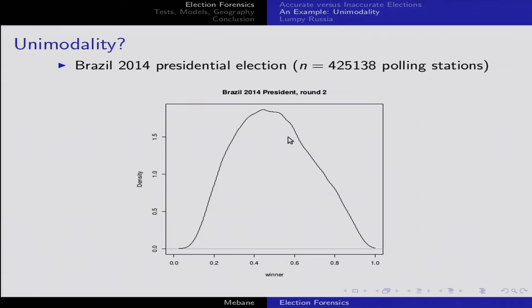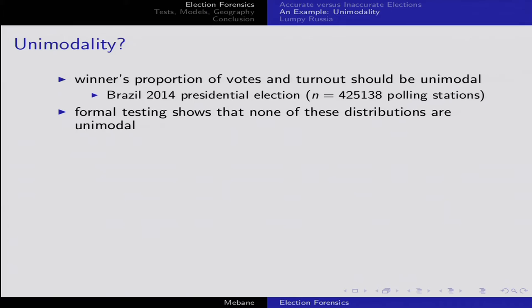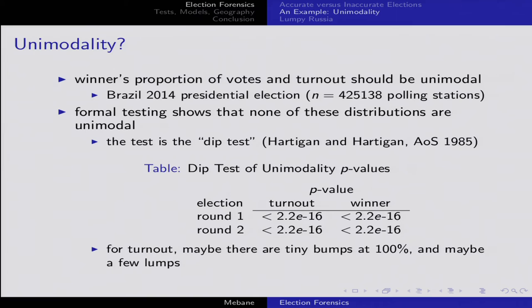My tone of voice suggests what you've already guessed: if you apply formal tests to all of these distributions, none of them are unimodal. The particular test I'm applying is the so-called dip test, from an article by Hartigan and Hartigan in Annals of Statistics in 1985. There's an R package that implements this. Basically, the p-value is zero — the R package generates these very small numbers. So none of those distributions that may have looked unimodal actually are unimodal.